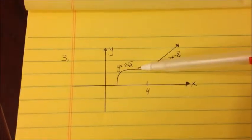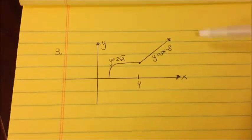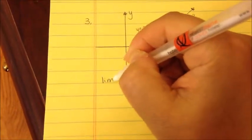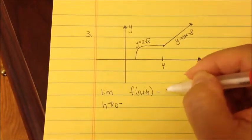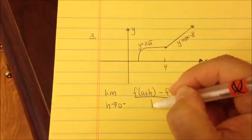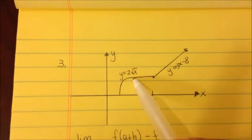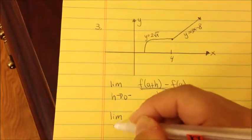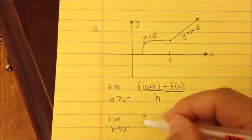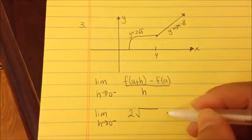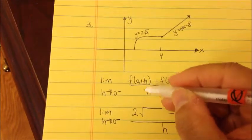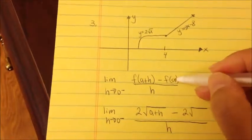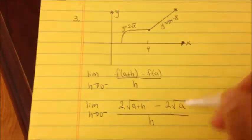The reason I think people will have questions on example 3 is because of the square root. Similar to example 2, we take the limit as h approaches 0 from the left-hand side, and write the general equation f of a plus h minus f of a all over h. The first equation is 2 times the square root of x, so we write 2 square root of a plus h minus 2 square root of a, all over h.